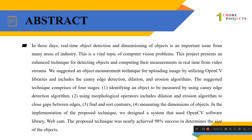It has four stages. First, identifying an object, which is measured using the Canny edge detection algorithm. The morphological operators include dilation and erosion algorithms to close gaps between edges. Next, finding and sorting contours and measuring the dimensions of the objects.